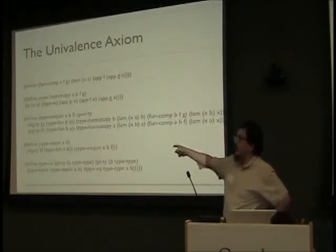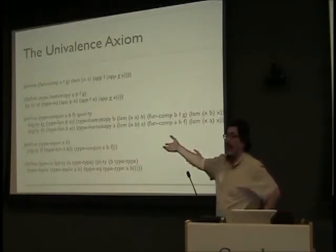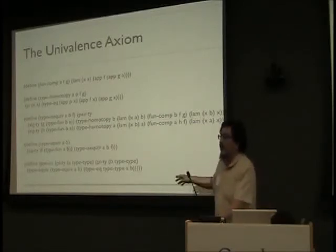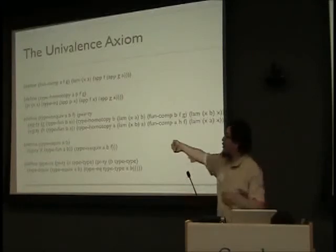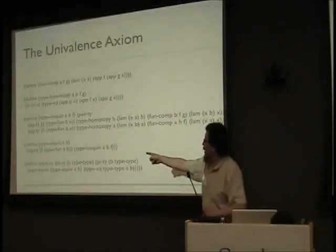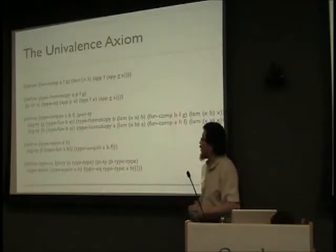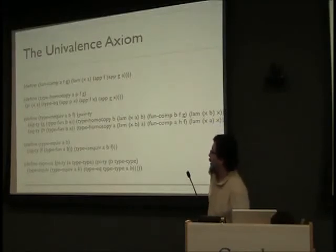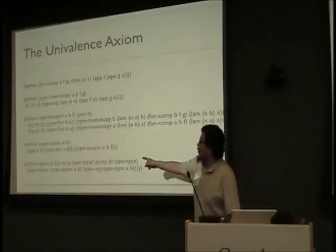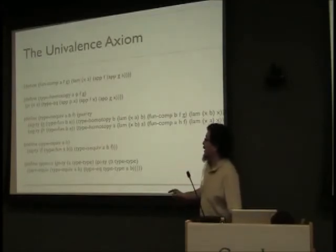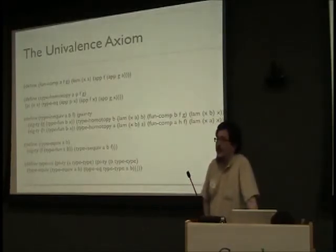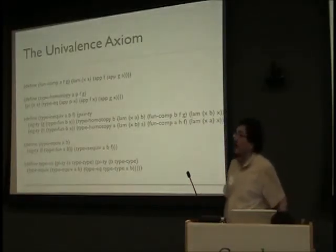Now the univalence axiom can be stated very concisely once we've done all this. It says: for all A that is a type, and for all B that is a type, it is an equivalence between the type of the equivalence between A and B, and the equalities of A and B as types. That's the univalence axiom. It's a proposition about types. When we say equivalence is equivalent to equality, we mean that two types that are equivalent — really loosely speaking, in bijection — that's in bijection with them being equal to each other in some sense.